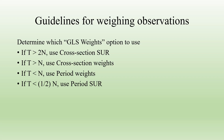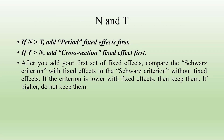If T is less than N, use period weights. If T is half of N, use period seemingly unrelated regressions. If N is greater than T, add period fixed effects first. If T is greater than N, add cross-section fixed effects first.